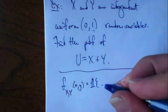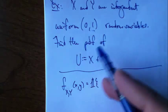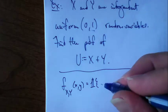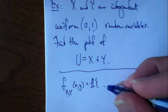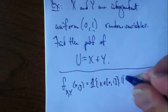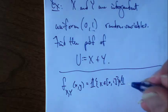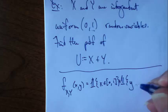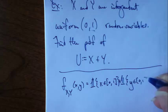The heights are one apiece, so it's just the product of the indicator that x is between 0 and 1, and the indicator that y is between 0 and 1.